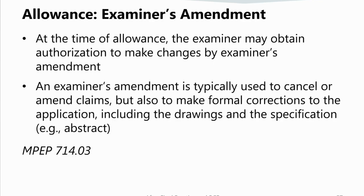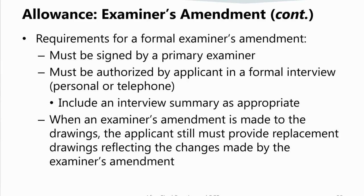When a reply to a final office action substantially places the application in condition for allowance, you may request that the applicant authorize an examiner's amendment to correct the omission and place the application in condition for allowance. An examiner's amendment is most often used to cancel or amend claims, and may also be used to make formal corrections including to the drawings and specification. It is included with a Notice of Allowability, Form PTOL-37. If a formal examiner's amendment is necessary, it must be signed by a primary examiner and authorized by applicant in a formal interview. When an examiner's amendment is made to the drawings, applicant is still required to provide replacement drawings reflecting the changes made.